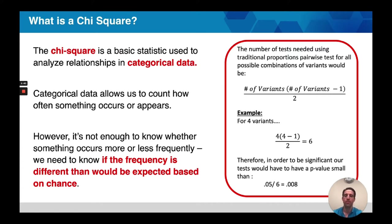For example, say we have 4 variants. 4 times 4 minus 1 divided by 2 is equal to 6. If we're going to be statistically rigorous, we're going to want to adjust our p-value, or our alpha, so that we have a new alpha value. So we take 0.05 divided by 6, and we get 0.008.